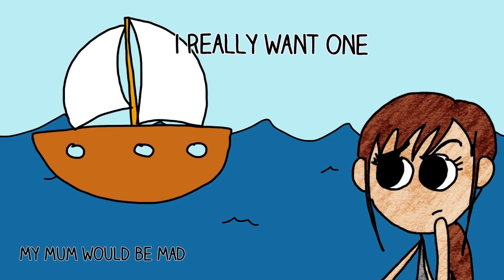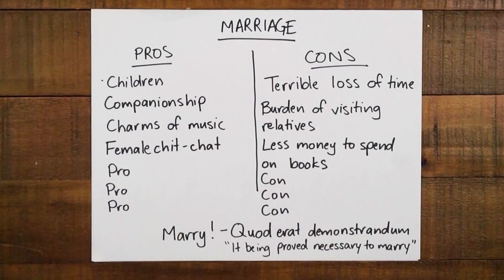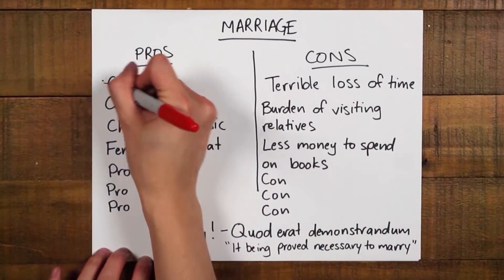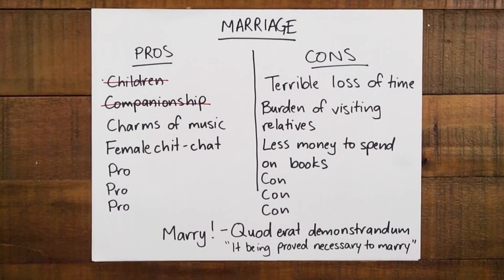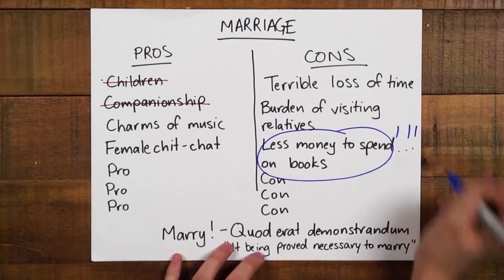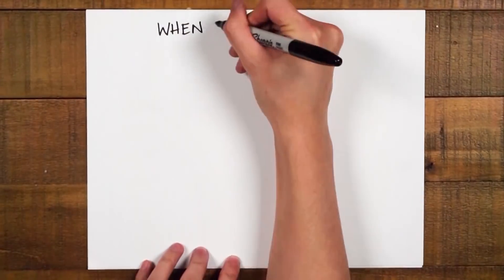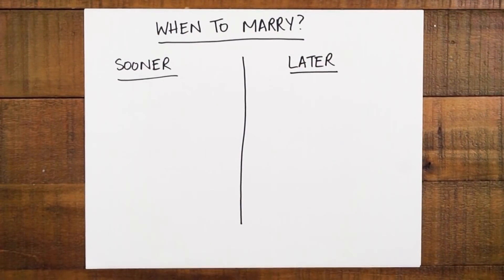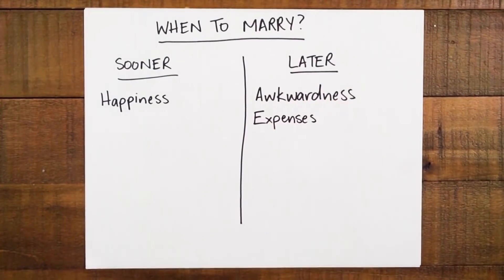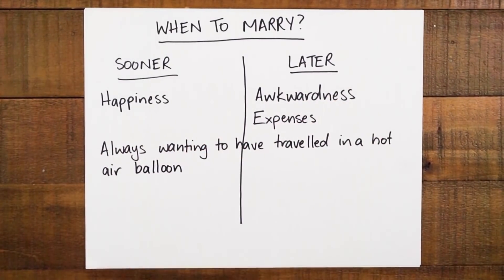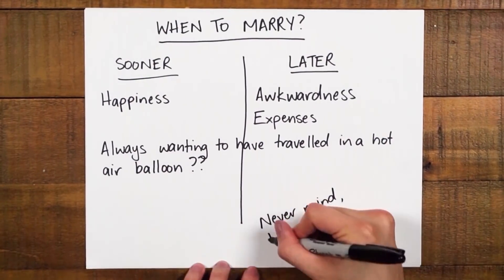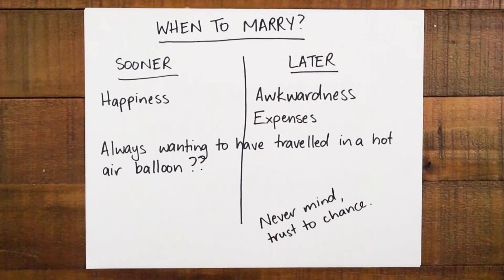This means that only the most important few have any say in the final decision. In Darwin's situation, this might've looked something like crossing out the less important stuff like children and companionship, and keeping only the stuff that really mattered — like not being able to spend as much on books. Right after he decided to marry by proof, he immediately started fretting about when to marry. He wrote yet another list of pros and cons, considering things like happiness, awkwardness, expenses, always wanting to have traveled in a hot air balloon — not sure whether that was a pro or a con — but by the end of the page, he resolved to just trust to chance. He had his own methods of regularizing.